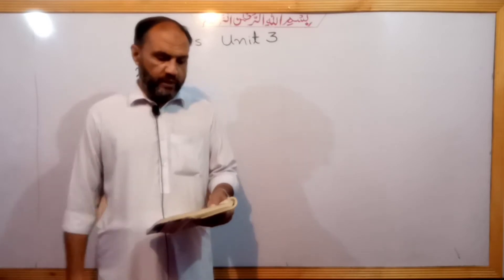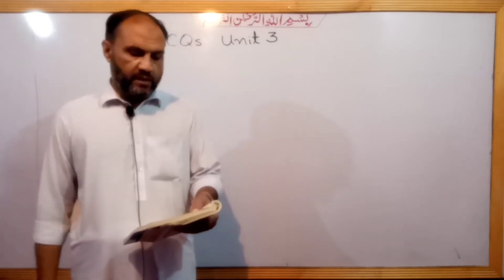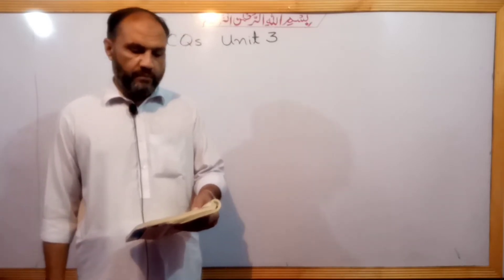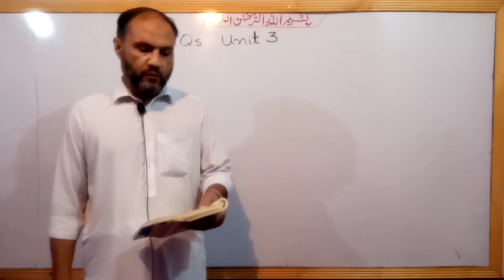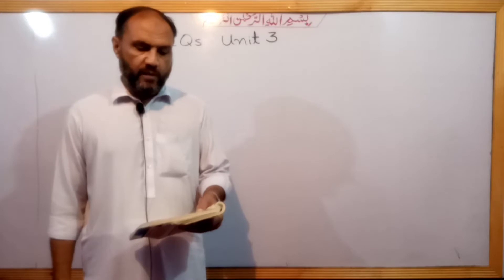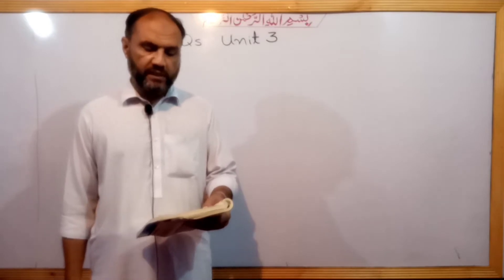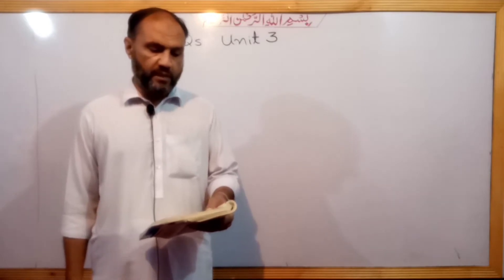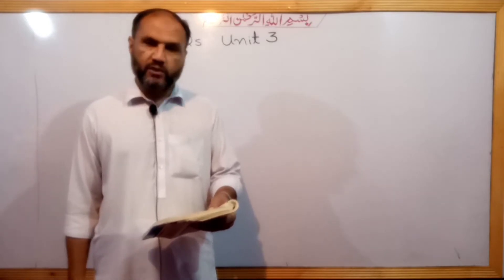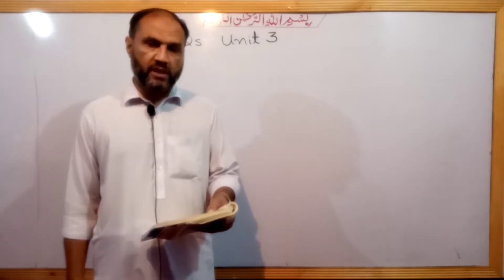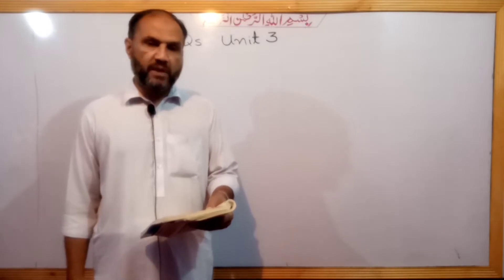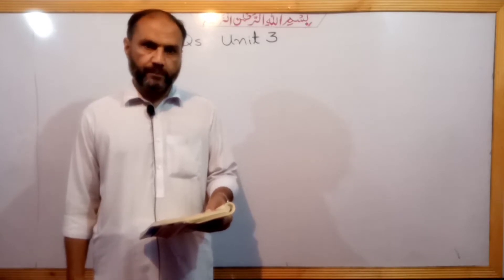Question number 1. A 30-kilogram object is supported from a rope such that the tension in the rope is equal to its weight. The rope supports a 30-kilogram mass.